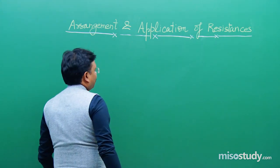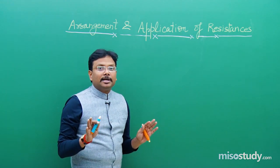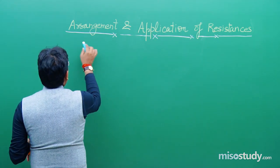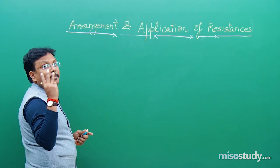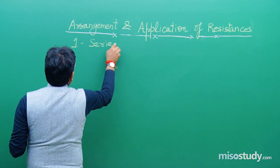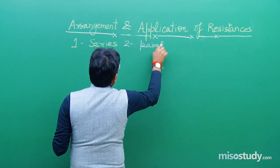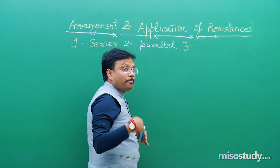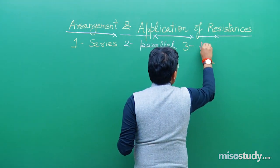Let us consider the situation. In this video I am not picking any complicated arrangement — very simple. The method of arranging various resistors is associated with three types: number 1 series, number 2 parallel, and the third that I want to introduce is mixed pattern.